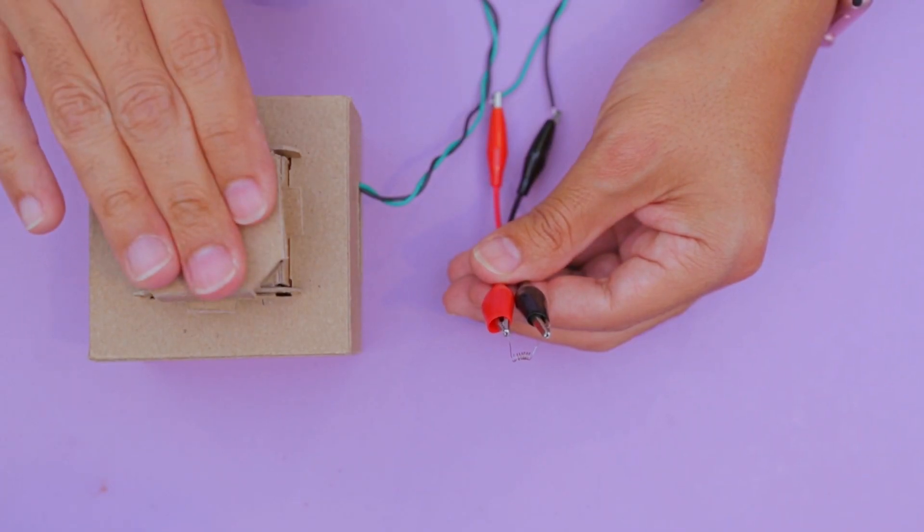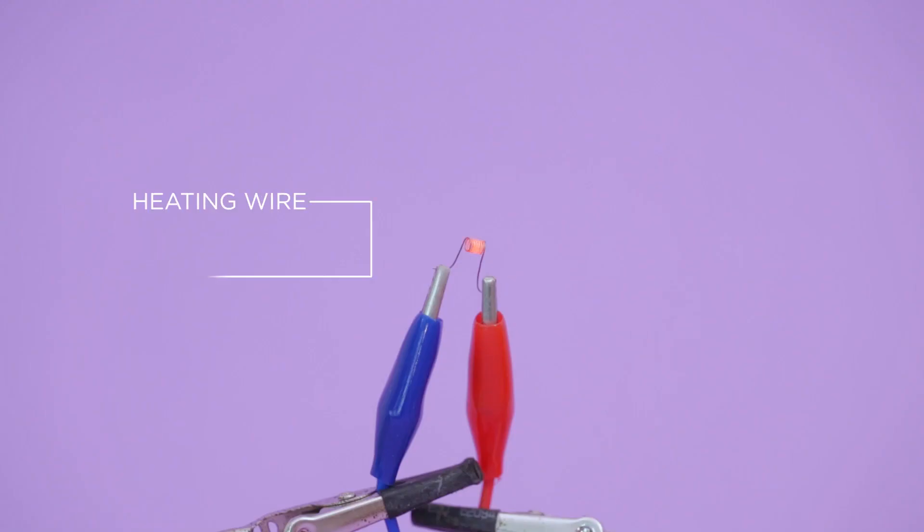This uses two 9-volt batteries to heat up a small coil of kanthal wire. Kanthal wire is great for high temperature applications that need resistance heating.